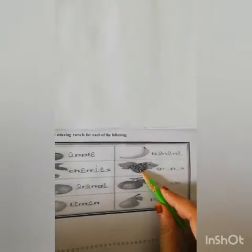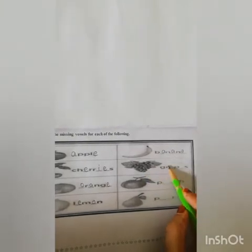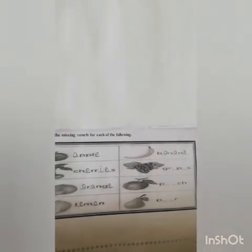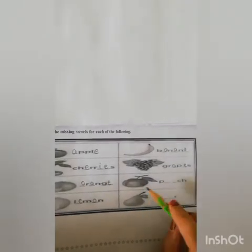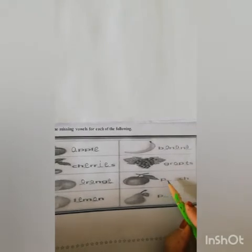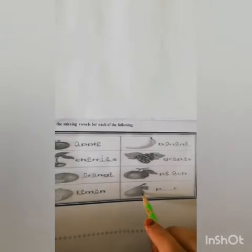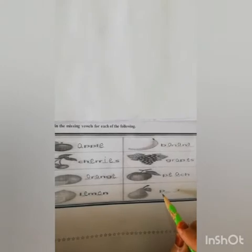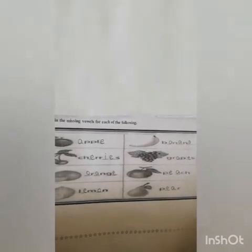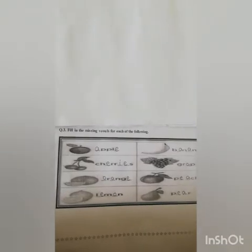This is grapes. The spelling of grapes is g, r, a, p, e, s — grapes. And this is a peach — p, e, a, c, h — peach. And this is a pear. The spelling of pear is p, e, a, r — pear. We have done this. You just have to put in the missing alphabets.